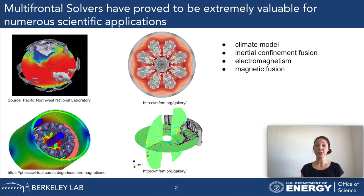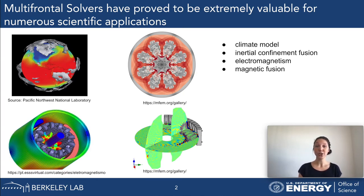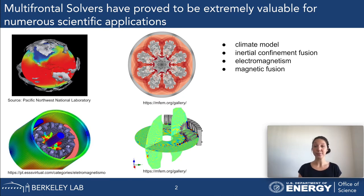Multifrontal solvers have been used for many large-scale finite element applications. Here are a few examples, ranging from climate modeling on the top left, to fusion examples on the right—like inertial confinement fusion or magnetic fusion—to electromagnetism, which includes the simulation of electrical motors on the bottom left.